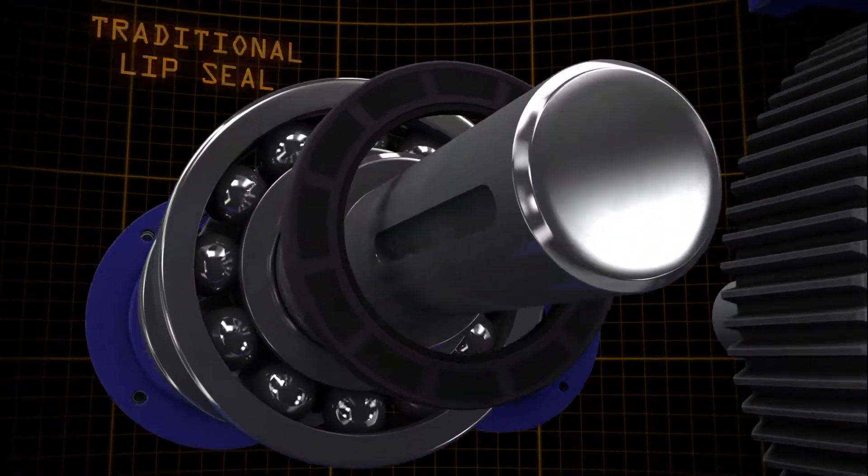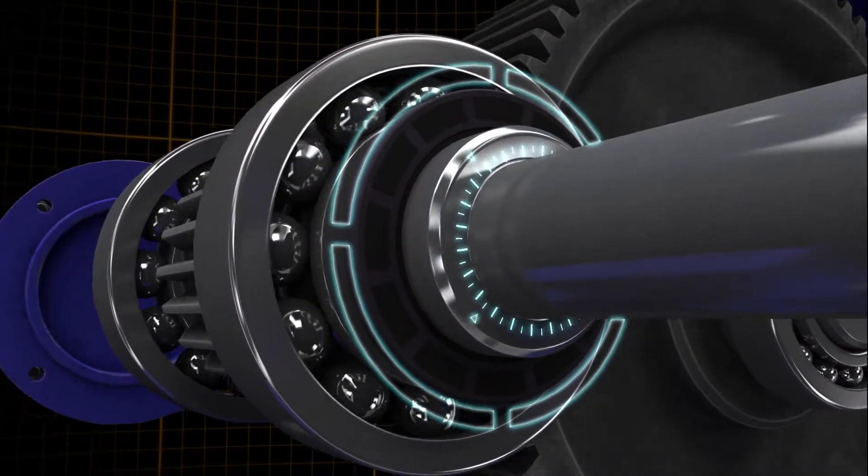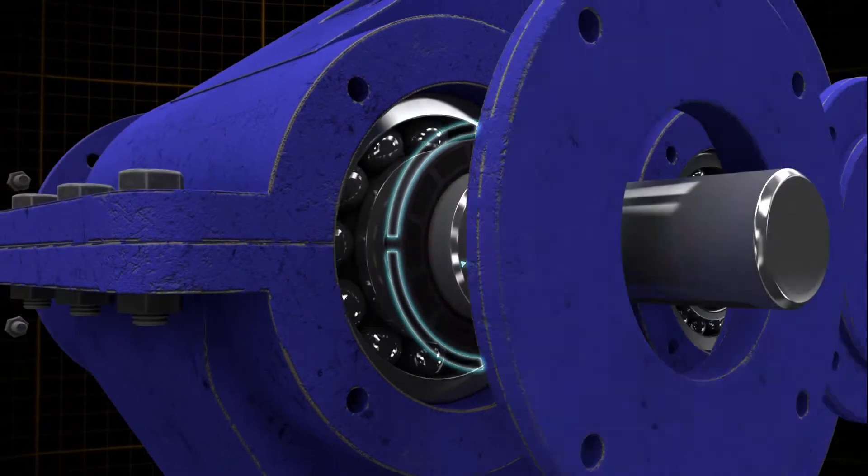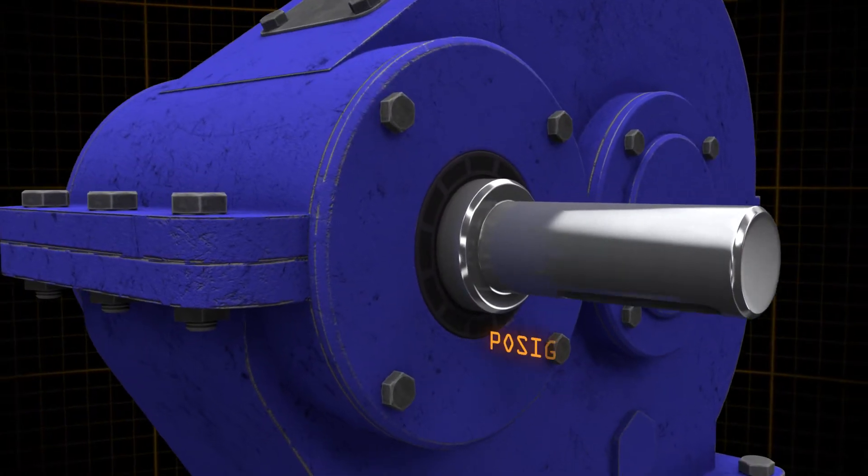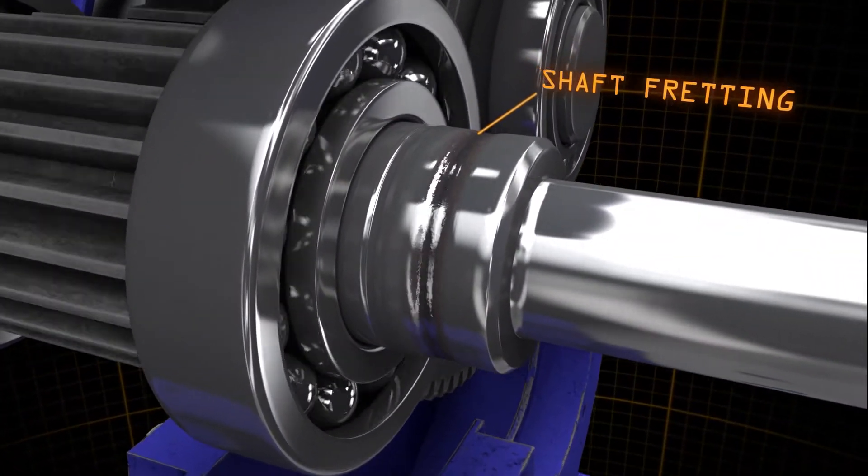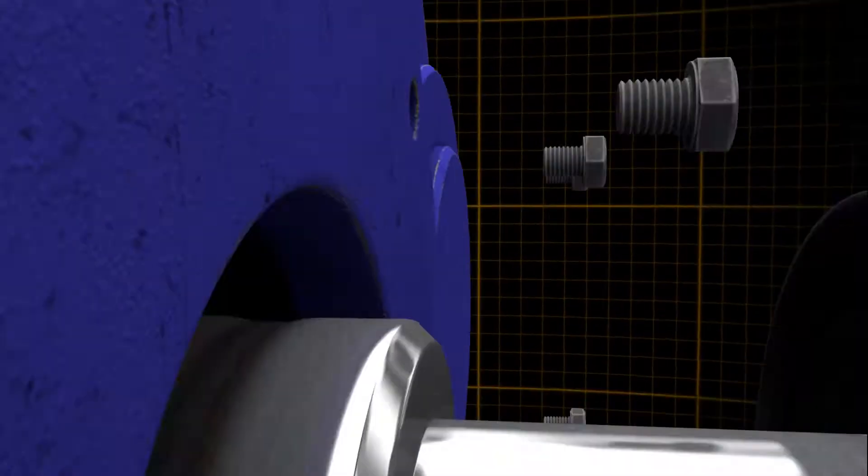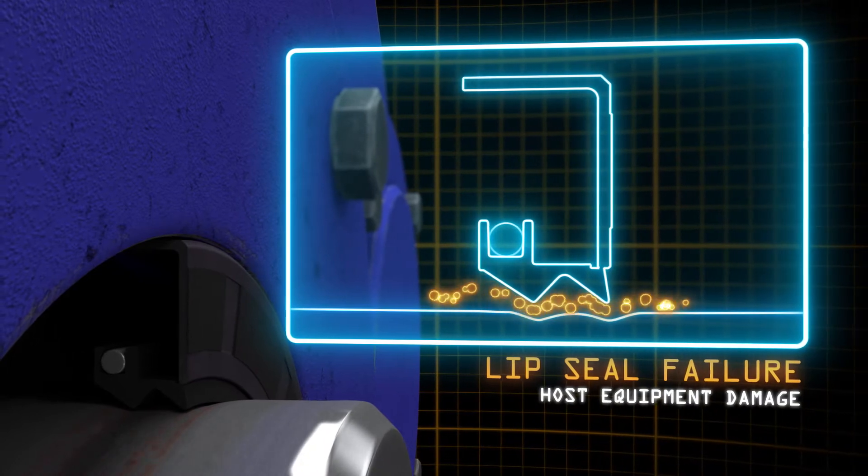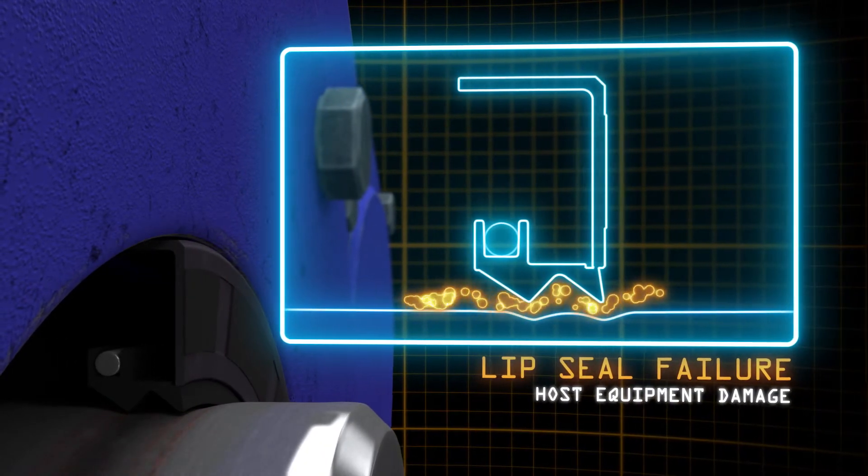Traditional lip seals use the rotating shaft as their primary sealing surface. While this solution created a positive seal, the resulting friction would over time create fretting along the shaft, allowing lubricants to escape and contaminants to enter.